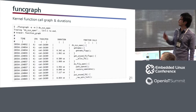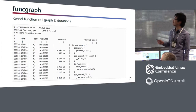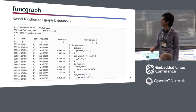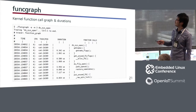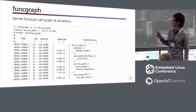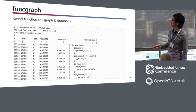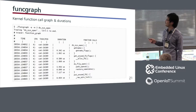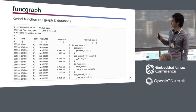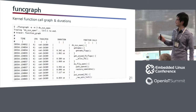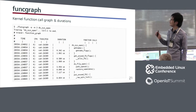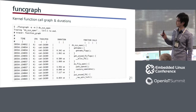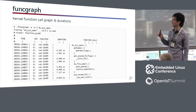FuncGraph prints the kernel function call graph and durations. In this example, it is tracing the child function calls of do_sys_open with a maximum depth limited to 3. It is really useful not only for troubleshooting but also for understanding how kernel functions work.